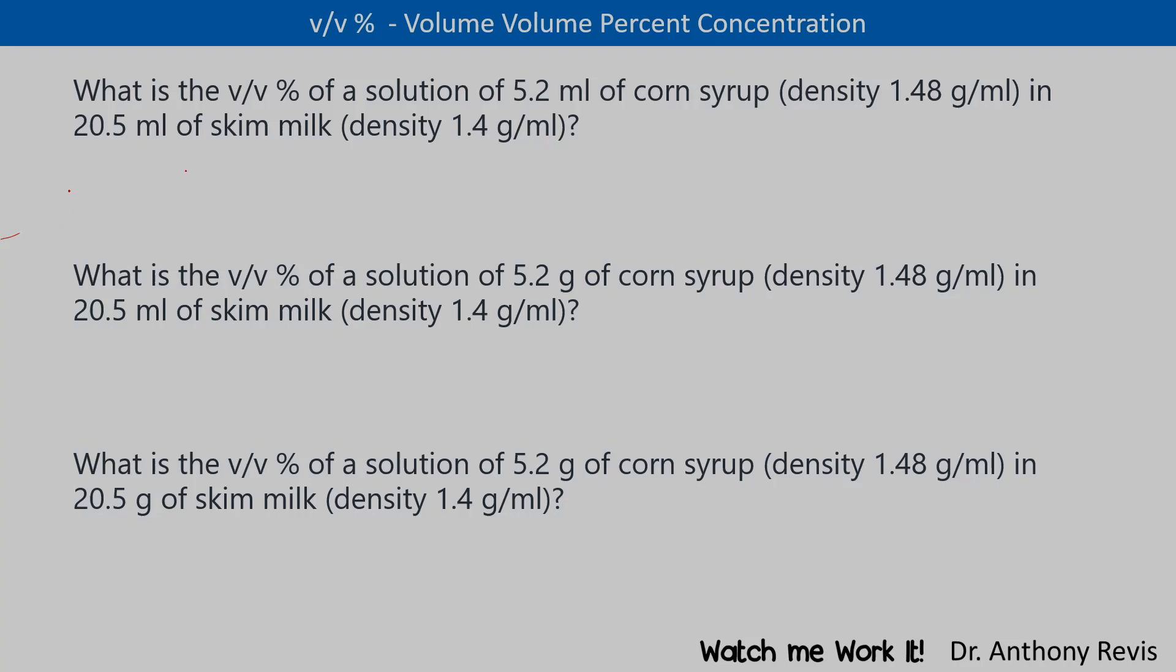In this case, we're doing volume-volume percent. So let's set it up as volume-volume percent equals the volume of the material that we're looking for. In this case, what we're looking for is corn syrup. So we have volume of the syrup divided by the total volume, always times 100 for percentage purposes.